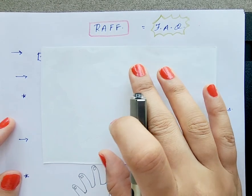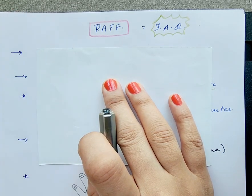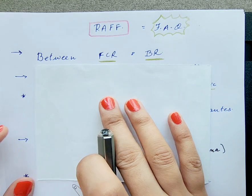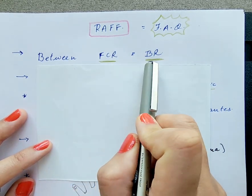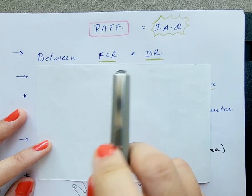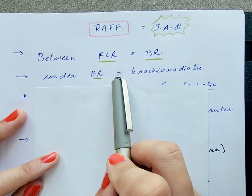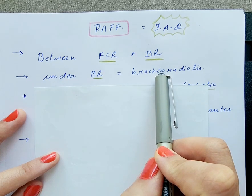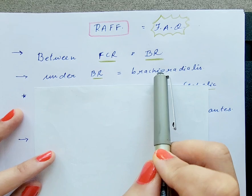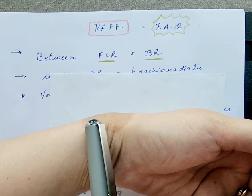First, between which two structures does the radial artery or the pedicle lie? It lies between the flexor carpi radialis and the brachioradialis, in the mid and distal part of the forearm. The radial artery runs under the brachioradialis all along the length of the forearm.